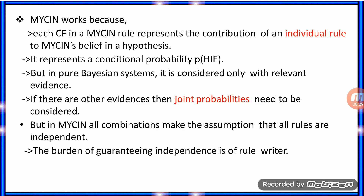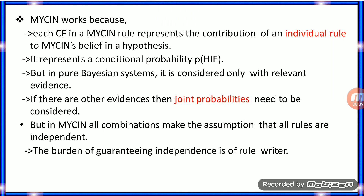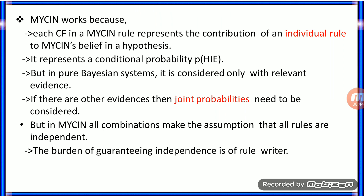Mycin works because each CF in a Mycin rule represents the contribution of an individual rule and represents a conditional probability. But in the pure Mycin system, only relevant evidence is considered. If there are other evidences, joint probabilities need to be considered. However, in Mycin, all combinations make the assumption that rules are independent.